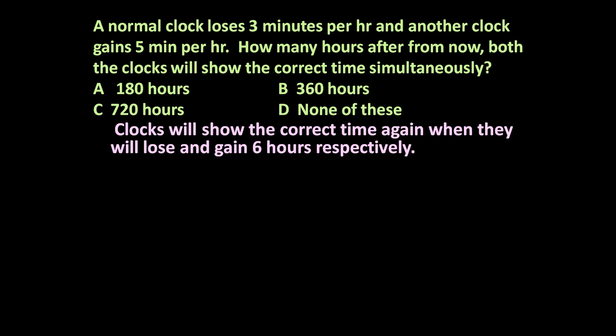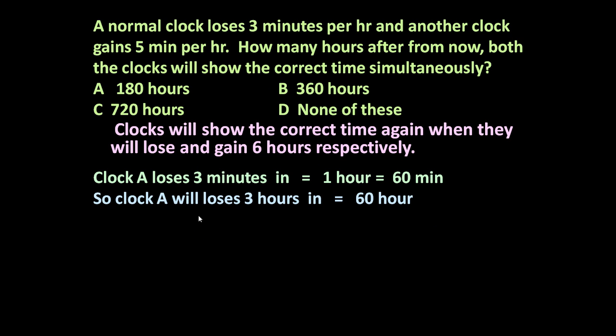Clock A loses three minutes in one hour or 60 minutes. So clock A will lose three hours in 60 hours, or it will lose six hours in 120 hours.